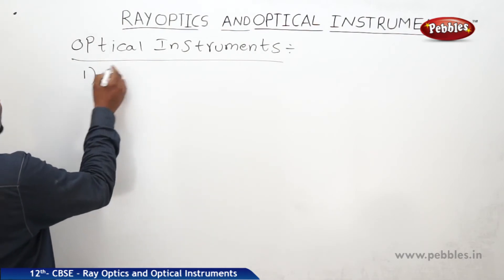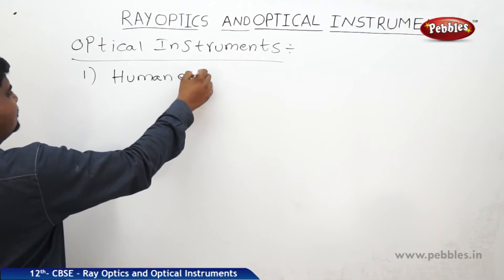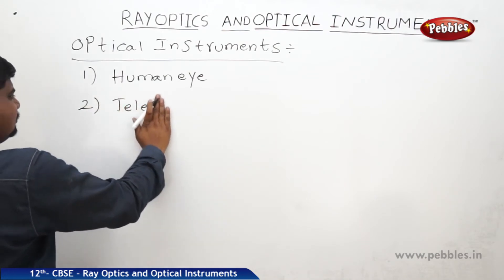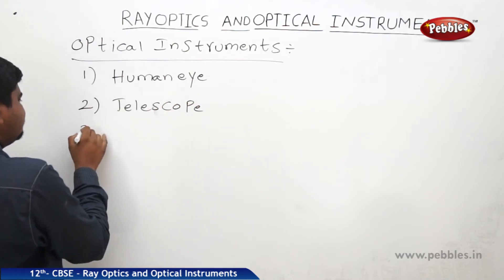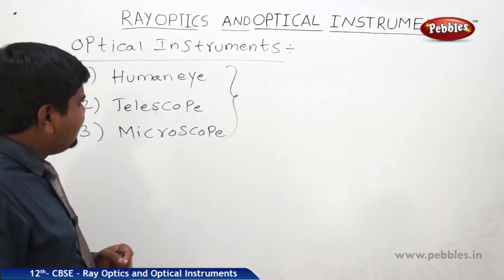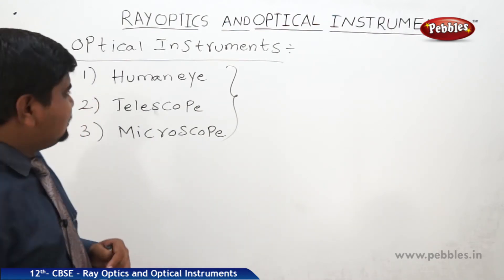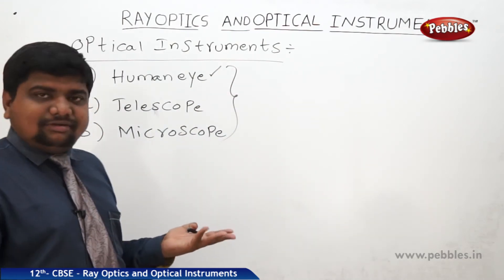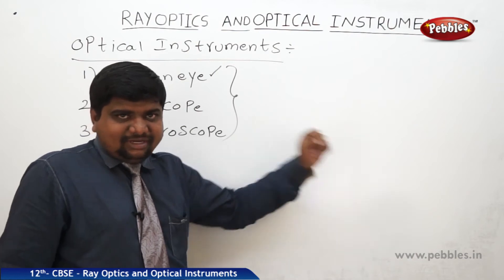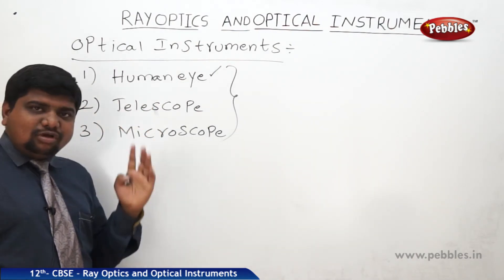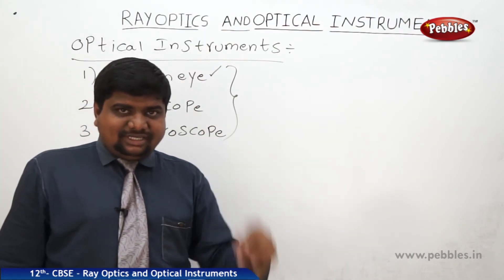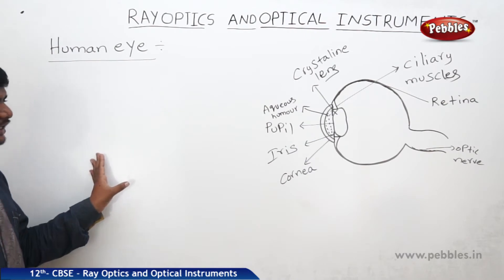In our syllabus, we are going to discuss the human eye, which is the best optical instrument — a God-made one. Next is the telescope, and then the microscope. These are the three major optical instruments whose design, functioning, defects, and remedies we will cover, along with their magnification.